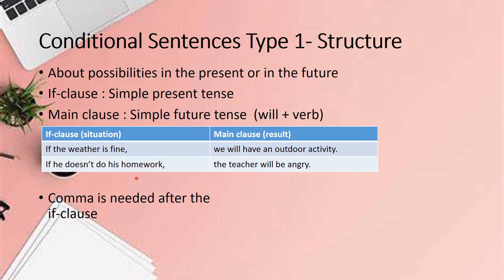In the second example: If he doesn't do his homework, the teacher will be angry. The result — the teacher will be angry — is very likely to happen because of the action in the if clause. We use the present tense 'doesn't do' in the if clause and the simple future tense 'will be' in the main clause. Note that a comma is needed after the if clause.